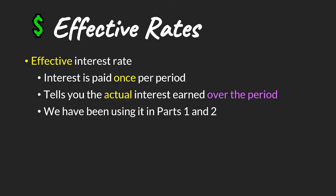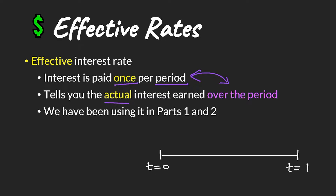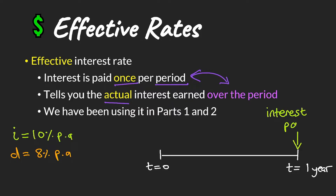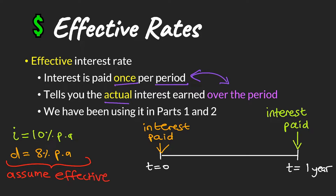Let's look at effective rates. These are interest rates where the interest is paid once per period, and it tells you the actual interest you earned over that entire period. We've been using this all along in parts one and two. For example, if you've got an interest rate of 10%, we know that the interest is paid once at the end of the year. And when we have a discount rate, the interest is paid once at the beginning of the year. So we can assume that these are effective because we are not told anything else.